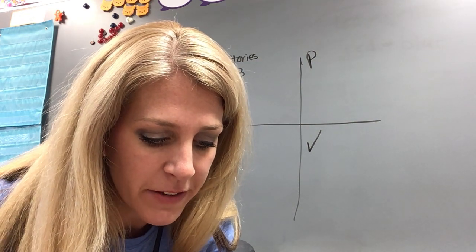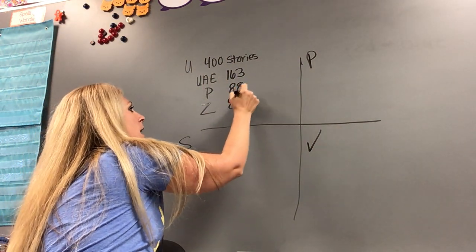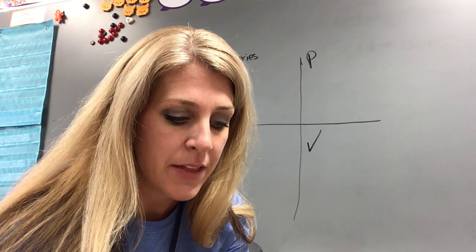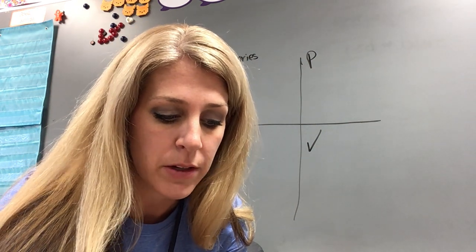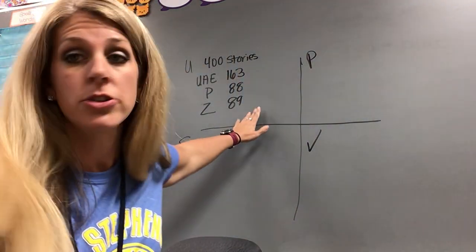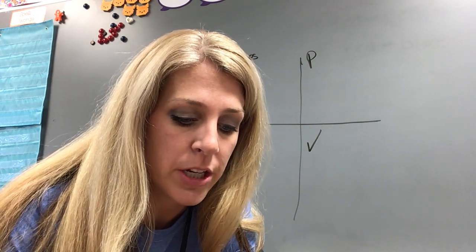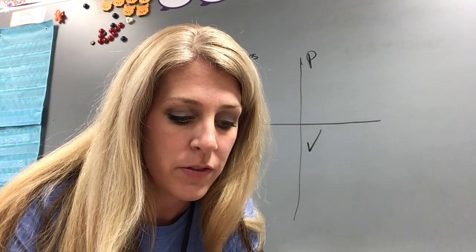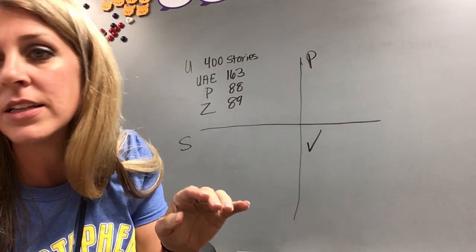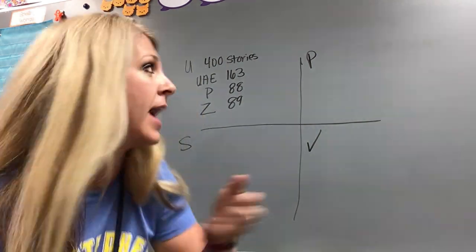And then it says, the Zifeng Tower in China has 89 stories. So I'm going to add that for my Z, 89. So all I'm doing right now is just pulling out, what do I know? What have I learned from my problem, okay? And then it wants to know, if Terrell climbs these three buildings, how many more stories will he need to reach his goal of 400? So sometimes it's important to know the information, of course, but also what is the question asking you to solve? So I'm thinking in my head, in that question, I know his goal is to get to 400. So if his goal is to get to 400, he wants this building, this building, this building, and then he needs to climb one more set of stairs to get to his goal, right? So I'm thinking of all the pieces he has to get to this goal.